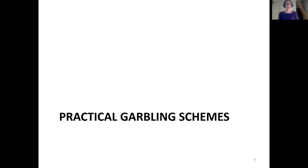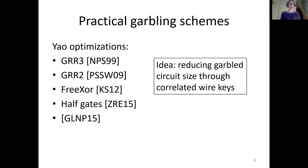The title talks about practical garbling schemes, meaning optimizations to Yao's garbling scheme. The idea of all of them is to reduce the garbled circuit size by correlating wire keys in different ways. In Yao's scheme, the garbled circuit consists of four ciphertexts per gate, and all these optimizations reduce that number. There's three-row reduction, which gets it down to three ciphertexts; two-row reduction, which gets it down to two; and free-XOR, which allows garbling XOR gates without ciphertexts. There's also half-gate, which is an optimization of free-XOR, and another construction by Gueron, Lindell, and Nof, which is an in-between approach.